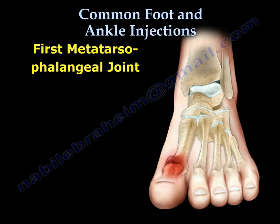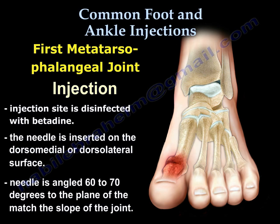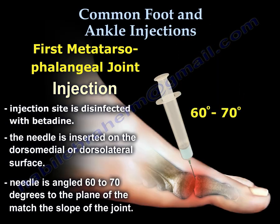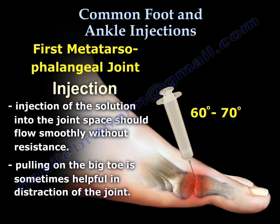The first metatarsophalangeal joint is usually affected by gout and arthritis. Use betadine solution and the needle is inserted from the dorsomedial or dorsolateral surface. The needle is angled about 60 to 70 degrees and directed distally. Distracting the joint by pulling on the big toe is usually helpful.